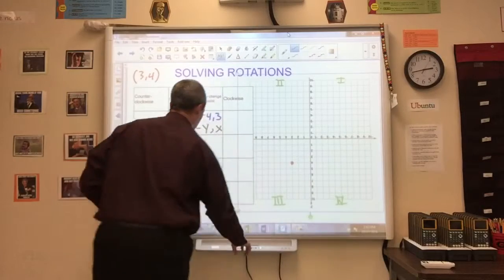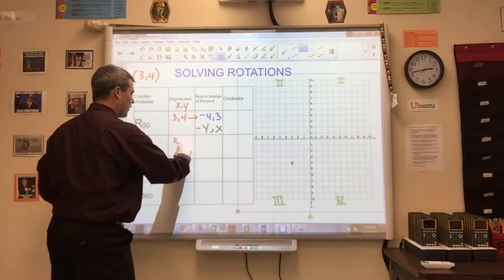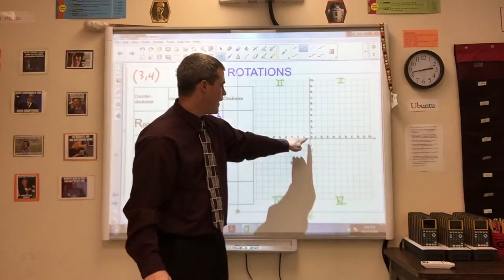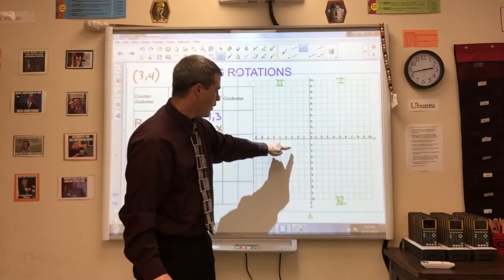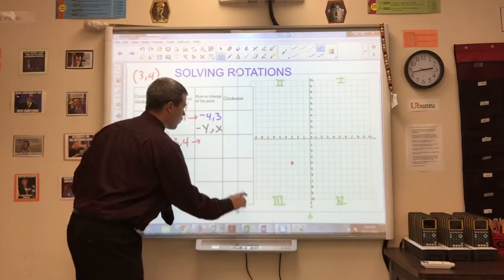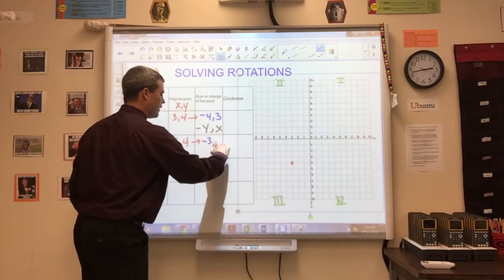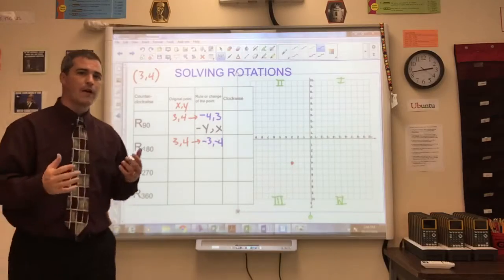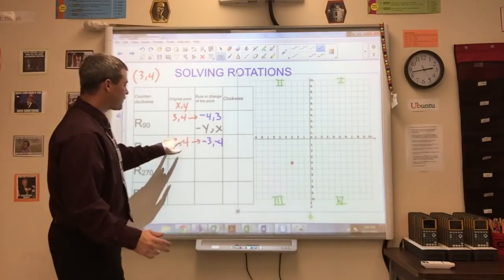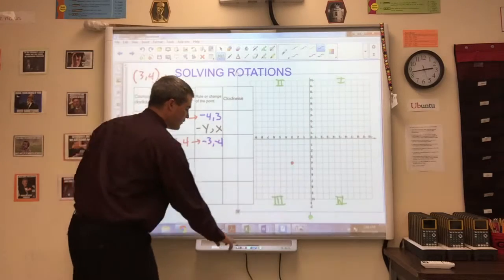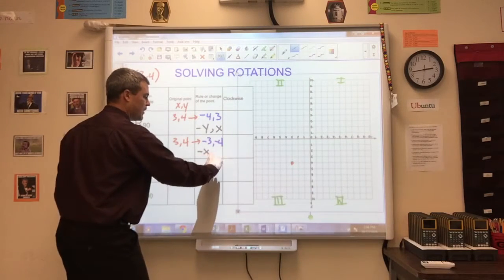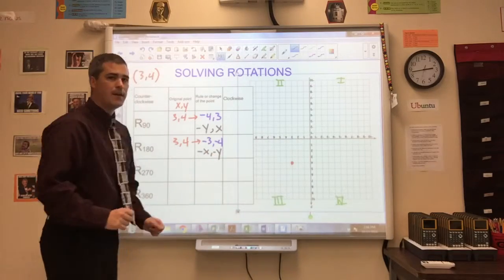So starting from my original point of 3, 4, my new coordinate is negative 3, negative 4. If I compare that to my original coordinate, the x and y has changed sides. So the rule for a 180 degree rotation is negative x, negative y.